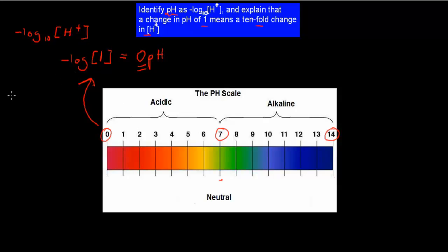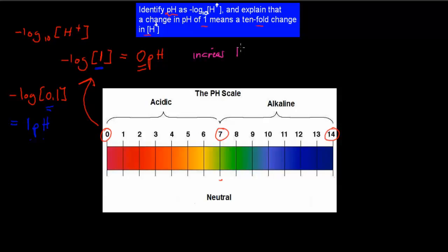If we type minus log of 0.1 into our calculator, our concentration was 1 originally and now we do 0.1. What you'll find is we go from pH of 0 to pH of 1. So 0.1 gives a pH of 1, and 1 gives a pH of 0.